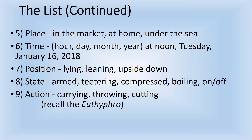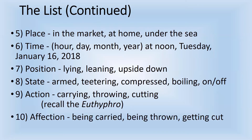And then finally, a pair: action and affection. Action is carrying, throwing, cutting — recalling Plato's Euthyphro, where he talked about action and affection. Affection is being carried, being thrown, or getting cut. So that's a list of 10 categories.